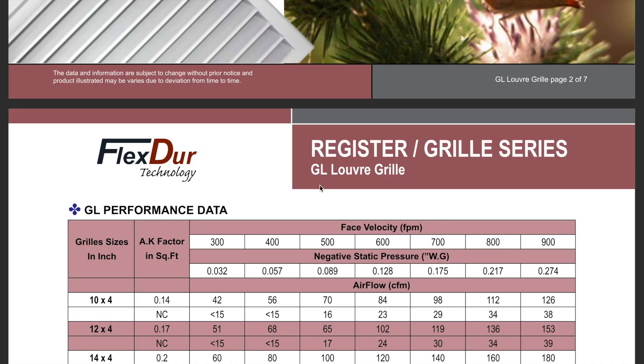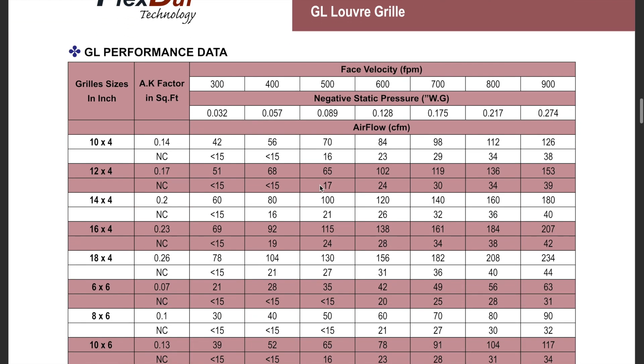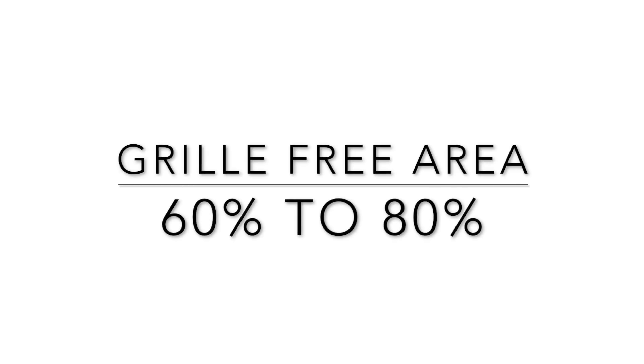This is a general method to size return air grill because most of the time you won't know the free area of the grill. For HVAC engineers, manufacturers are required to provide their grill specifications, meaning we know the free area of their grill. Usually, we select return air grills from the chart provided by the manufacturer — we don't need to calculate the grill size because the airflow capacity of each grill size is stated in the chart. Most of the time, we see grills constructed with 60 to 80% free area, and the average free area is 70%.